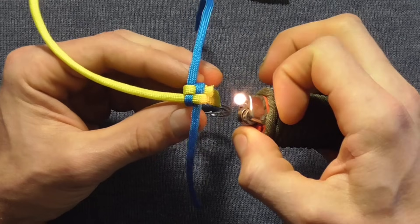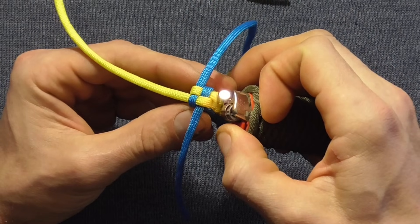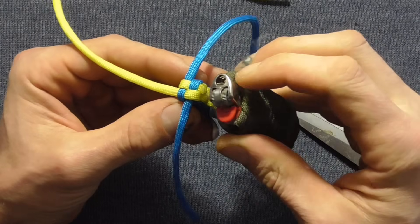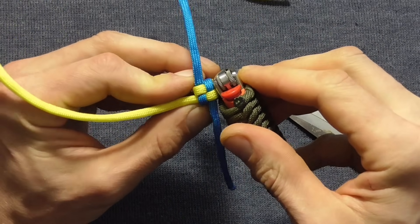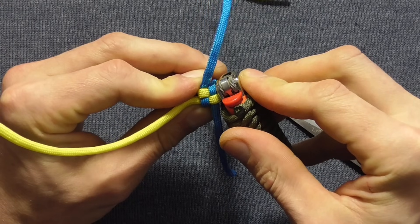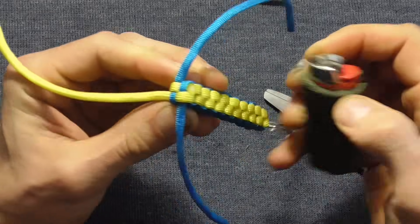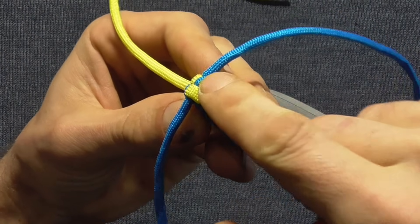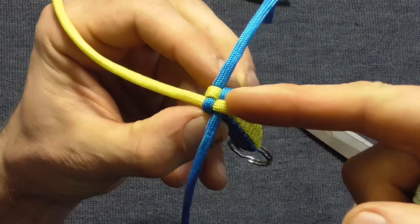So singe the end with a lighter, and then smush it into place, and just make sure that this end bit is nice and wide so it doesn't pull back through the knot.